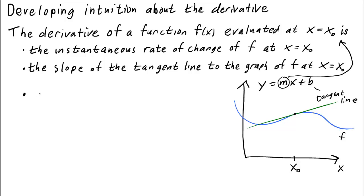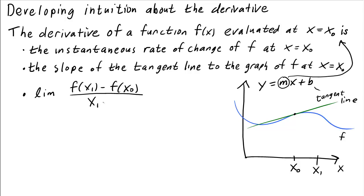The way we actually define the derivative is through a limit. We look at the slope of a secant line from x0 to x1, and the slope of the secant line is the change in f — that's f of x1 minus f of x0 — divided by the change in x, which is x1 minus x0. Then we take the limit as x1 goes to x0, as these two points get closer and closer together.